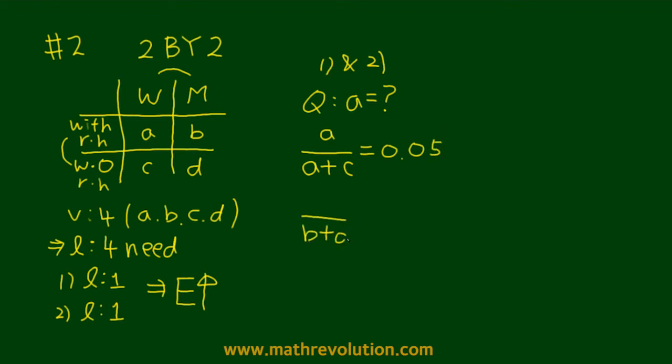The total number of men now in condition two is B plus D, and the number with red hair is B, and this is supposed to equal to 0.1.